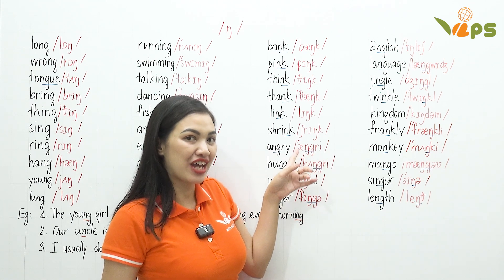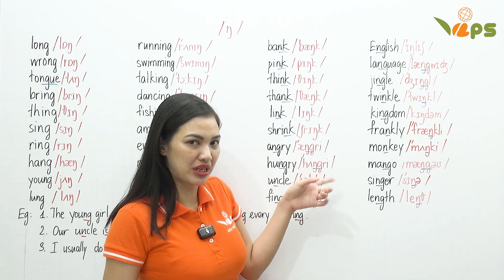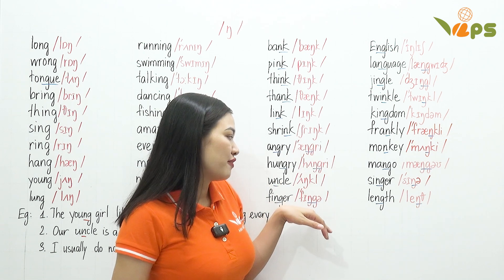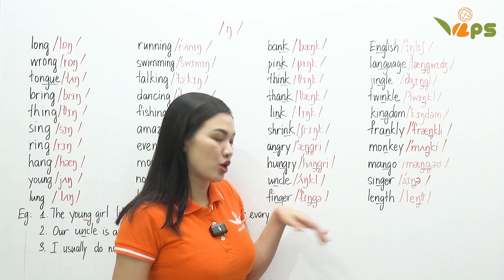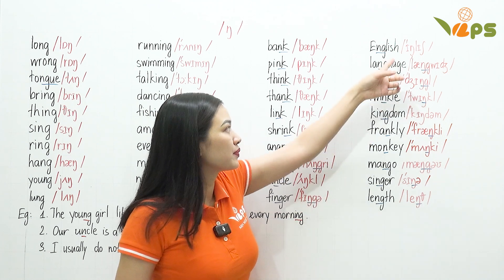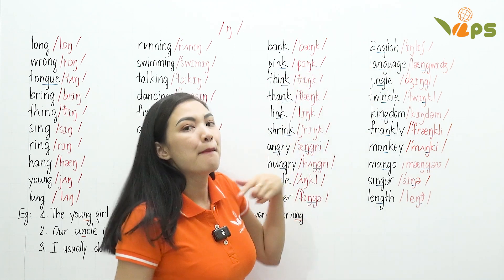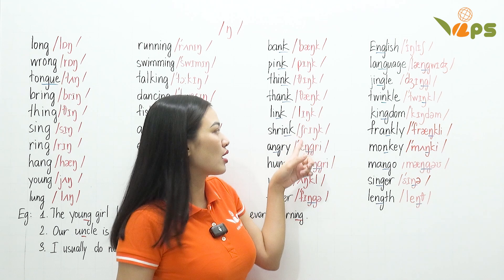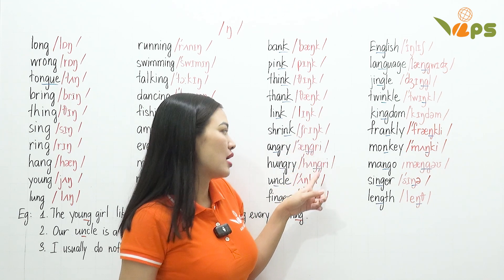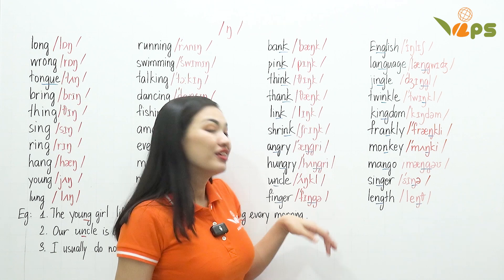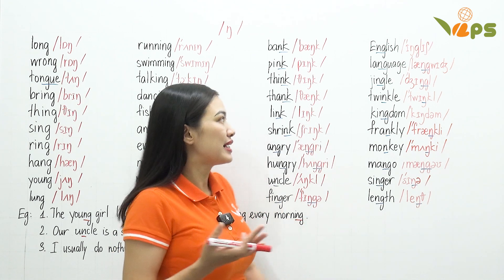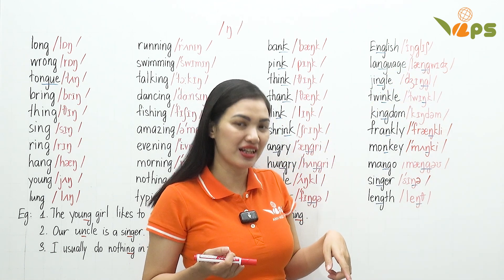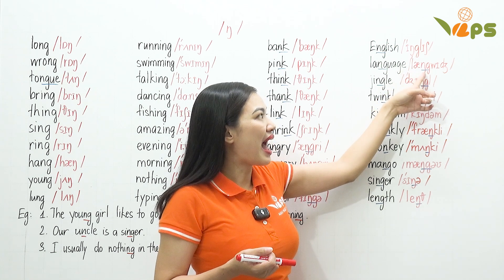Angry. Hungry. Uncle. Finger. One more time: bank, pink, link, shrink, angry, hungry, uncle, finger.